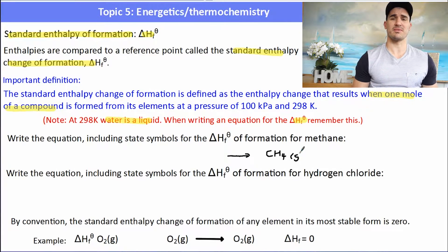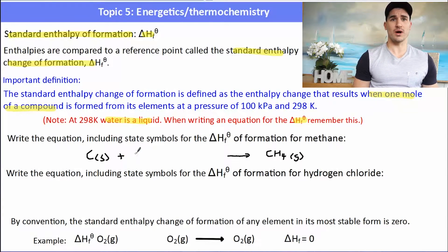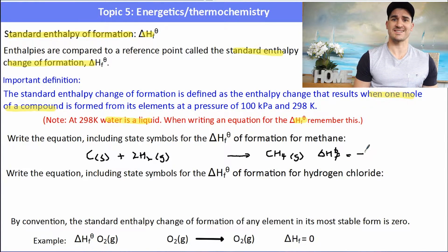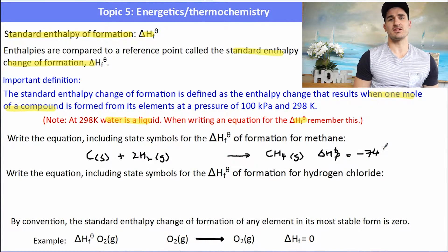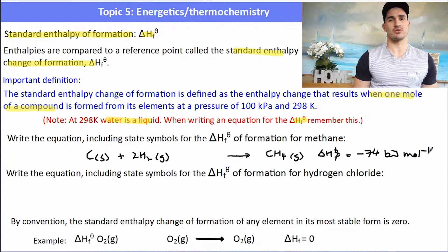So if we wanted to write the delta H formation equation for methane, we actually start with methane CH4, and then we got to think, okay, one mole of methane, what's that formed from? It's formed from one mole of carbon solid plus four moles of hydrogen. Now hydrogen comes as H2, so we need two moles of H2 gas because that's its standard state. Now the delta Hf, I could look that up in the data book and it would tell me that in that process we release negative 74 kilojoules per mole.